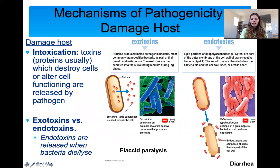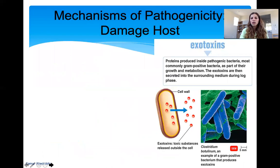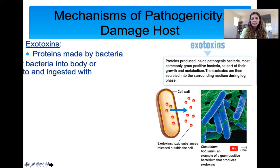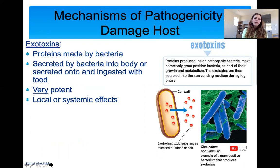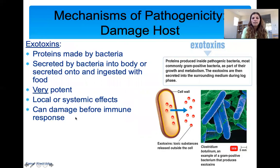Exotoxins are proteins made by bacteria and secreted into the body, or secreted onto food that is then ingested. This is why we worry about canned food — it can have toxins in it. Toxins are very potent; you need very little toxin to get very sick. They can cause local or systemic effects and can damage before your immune system even has time to respond. Toxins start damaging your cells before your immune system has time to recognize and target the pathogen.